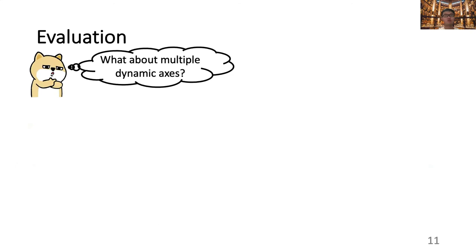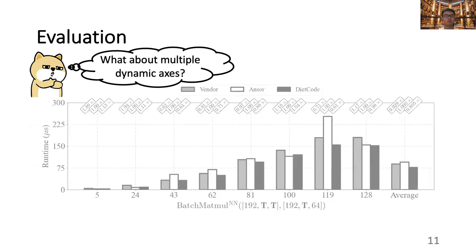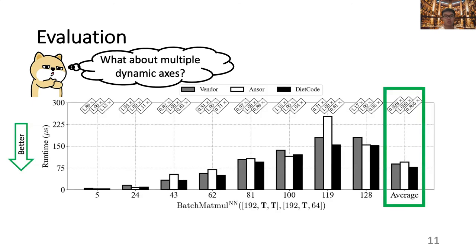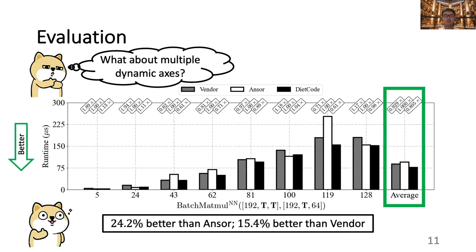To make it even more exciting, DietCode also supports workloads with multiple dynamic axes. We auto-schedule the batched matrix multiply layers extracted from the BERT model, with dynamic spatial axes and dynamic reduction axes. As we can see from the result, across all the sequence lengths evaluated, DietCode delivers an average 24% performance better than Ansor and 15% performance better than the vendor library. These results indicate that DietCode is a practical auto-scheduler for dynamic shape workloads.